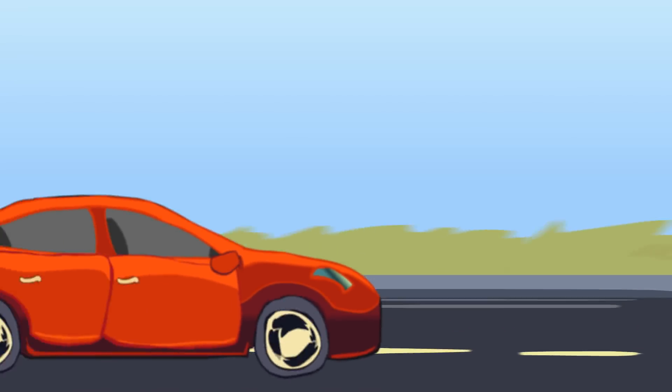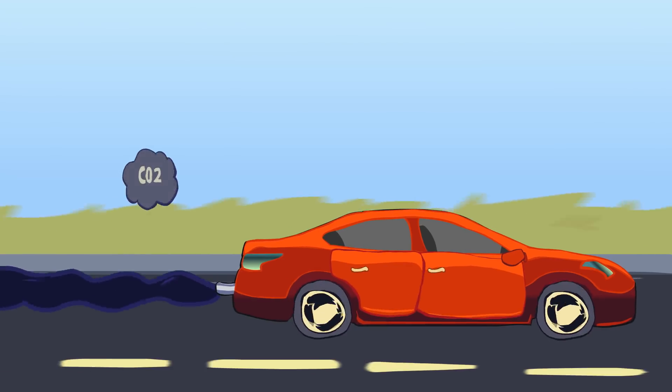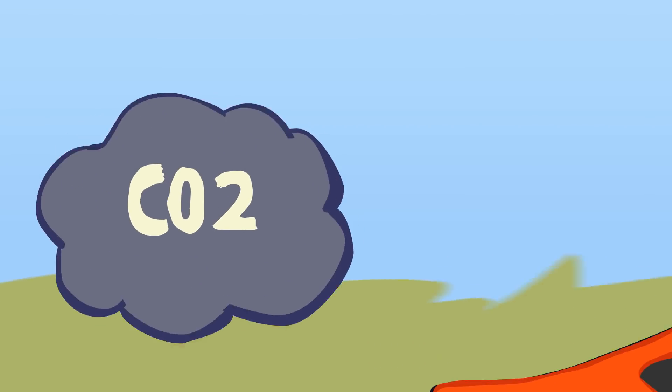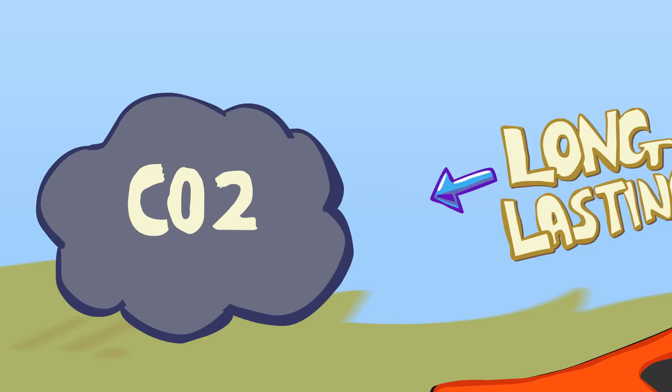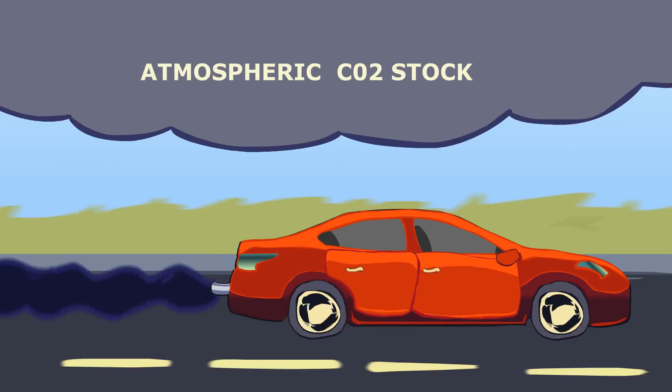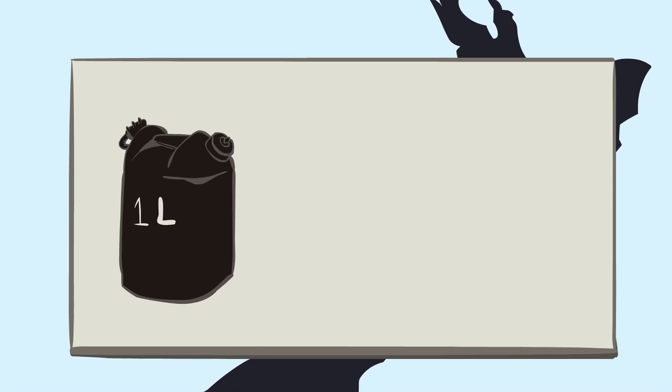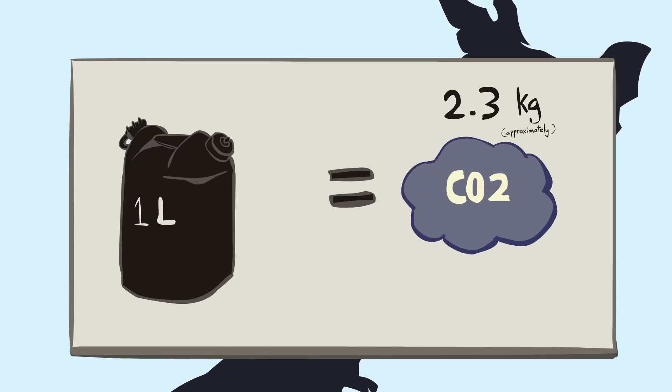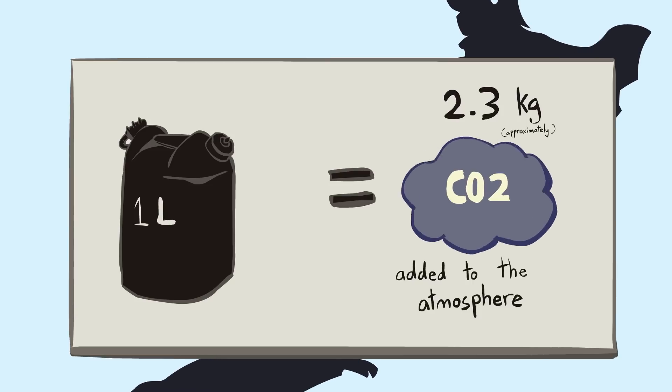When we burn coal and oil, we add CO2 to the atmosphere. This CO2 lasts for hundreds of years and therefore adds to the stock of CO2 already in the atmosphere. For every liter of petrol we burn, around 2.3 kg of CO2 are added to the atmosphere.